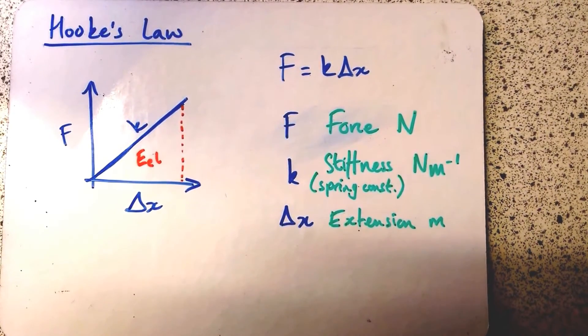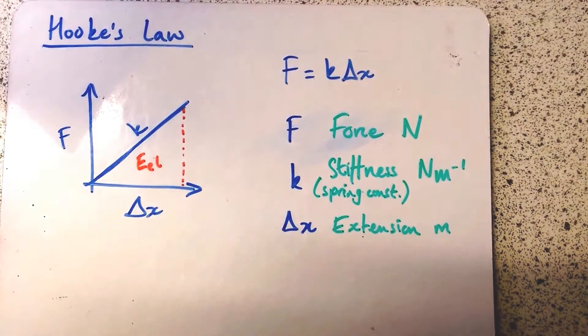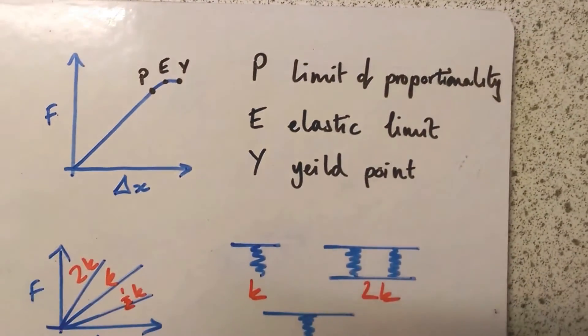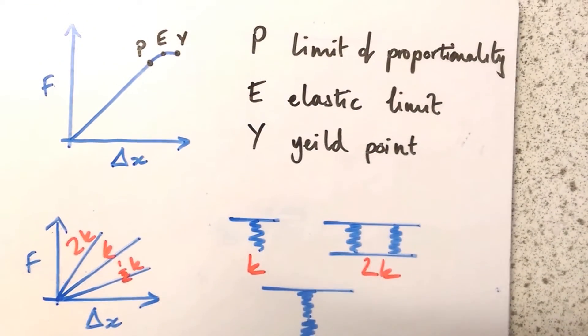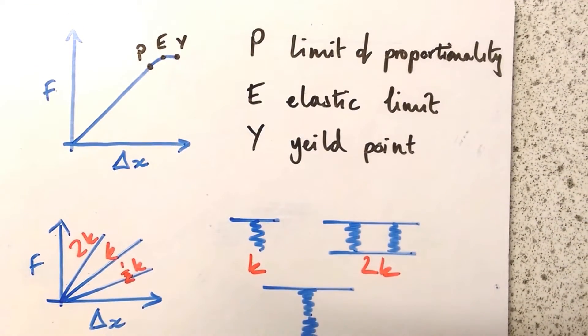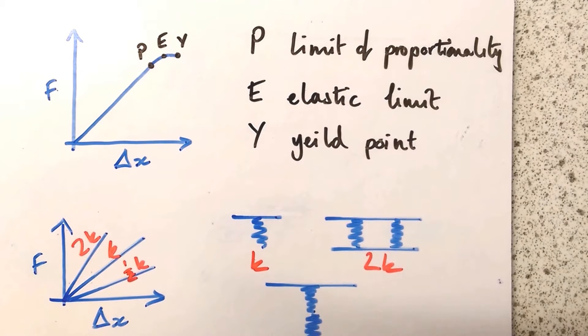You can see the equation at the top in blue: F = kΔx. I've annotated this graph here. It's the same idea, the same graph, but it goes a little bit further. I've annotated it with P, E, and Y.